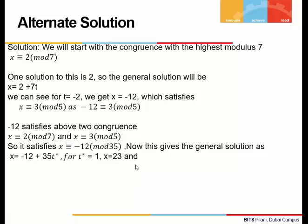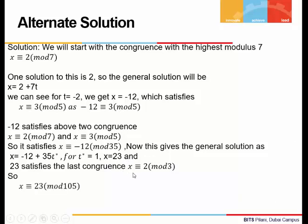This will give us the general solution x = -12 + 35t*. For t* = 1, we get x = 23, and if you put this 23 in the third congruence, x ≡ 2 (mod 3), it satisfies. Hence, the final solution is x ≡ 23 (mod 105), the product of all three moduli.